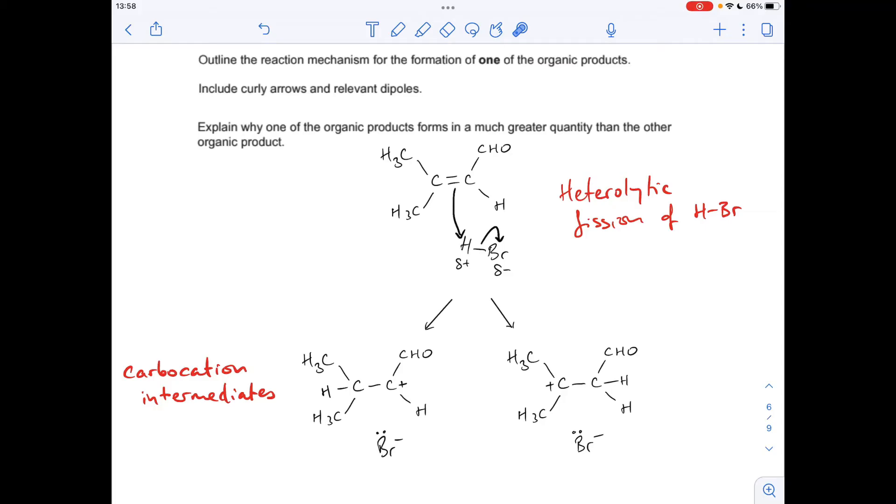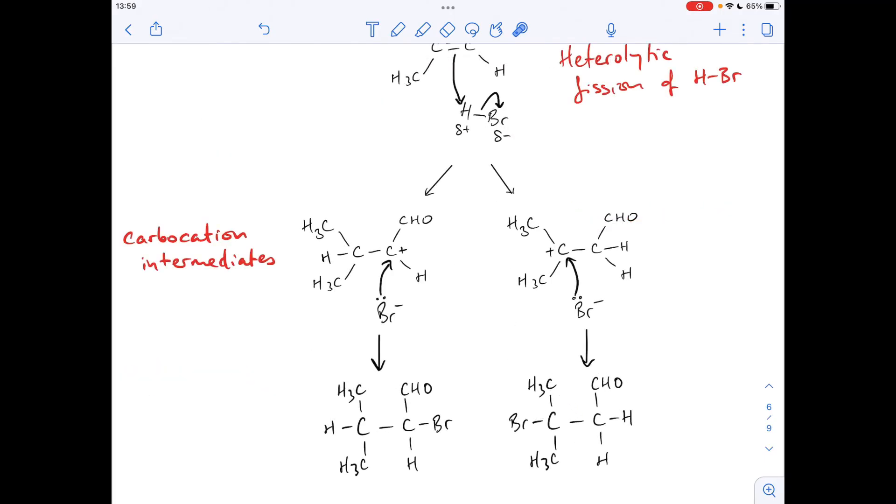So the final part of the mechanism, we basically need to just bond the bromide ion to the carbon with the positive charge on. So we show a lone pair of electrons on the Br- ion and a curly arrow is drawn from the lone pair to the carbon with that positive charge. Likewise there. So the two possible products look like these two here.